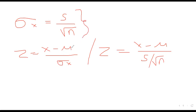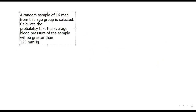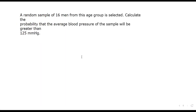Here is a worked example from last year's exam. We are told that the systolic blood pressure for males is normally distributed with a mean of 122 and standard deviation of 10. A random sample of 16 men is selected. Calculate the probability that the average blood pressure of the sample will be greater than 125.